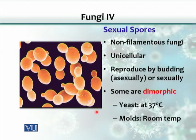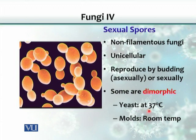Some yeasts are dimorphic — meaning two morphologies or two shapes. They can exist as yeasts or transform into a filamentous form, what we call molds. If they infect people or animals, where body temperature is 37 degrees Celsius, they develop into unicellular yeast form. But if cultivated at room temperature, the same yeast can change into a filamentous mold form. This is why most pathogenic yeasts are dimorphic in nature.